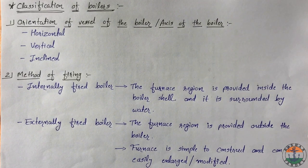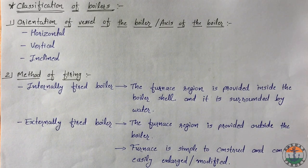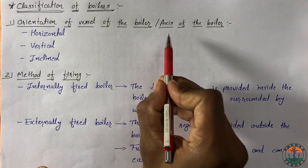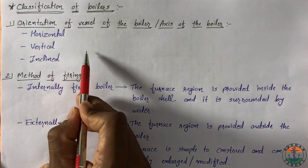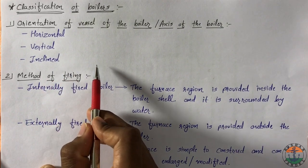There are many parameters based on which boilers are classified. Some of them are discussed over here. First is orientation of vessel of the boiler or axis of the boiler: horizontal boiler, vertical boiler and incline boiler.